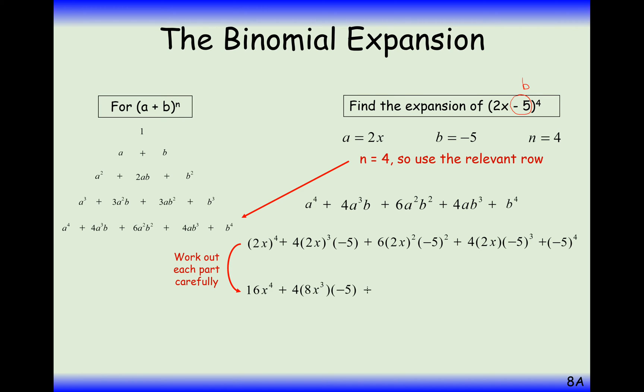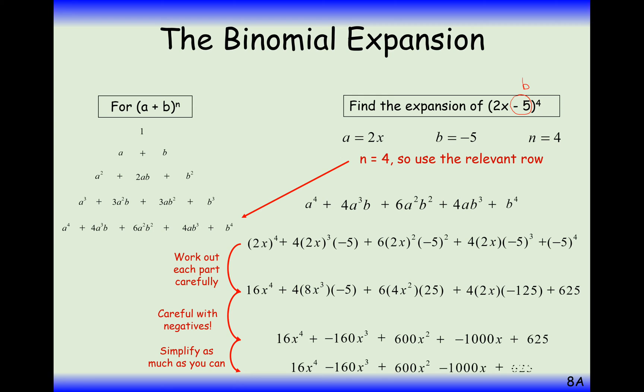And simplifying all of this, being really careful. Maybe you might even take two stages to do this. Being really careful of your negatives. And we get this expression here. 16x to the 4 minus 160x cubed plus 600x squared minus 1,000x plus 625. So much easier than expanding four brackets and then multiplying all of those brackets by all the other terms inside all of those other brackets. Just use the binomial expansion. We'll use Pascal's triangle coefficients here.